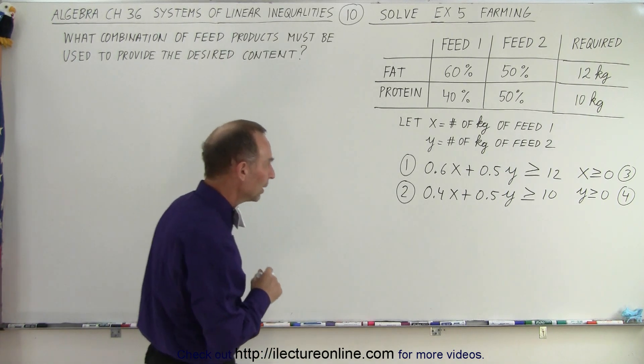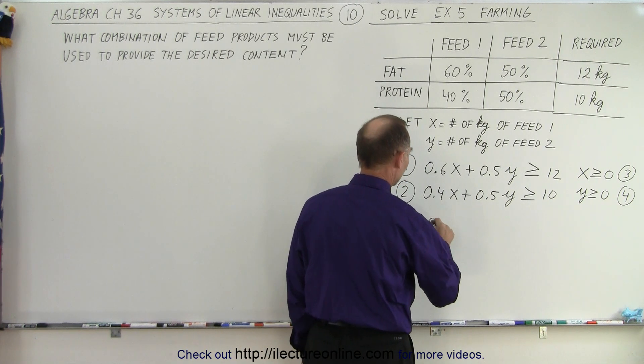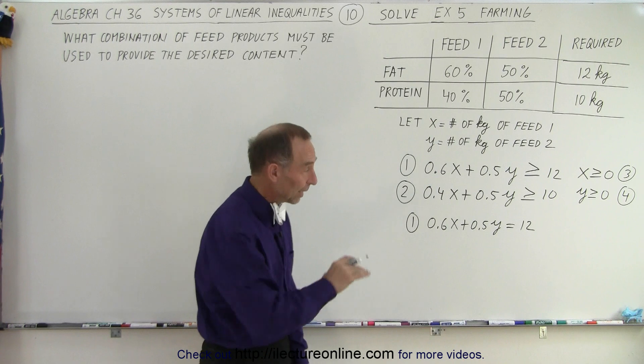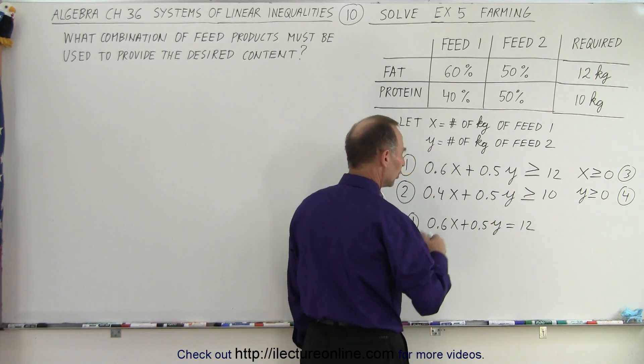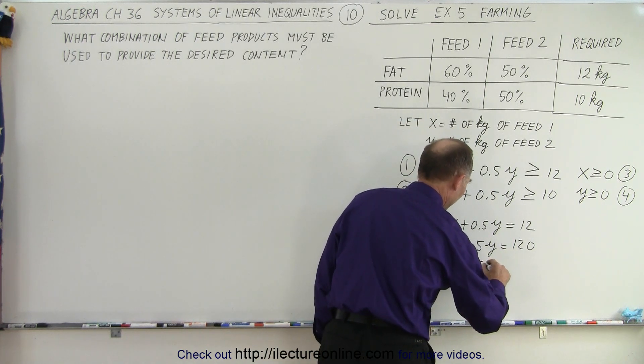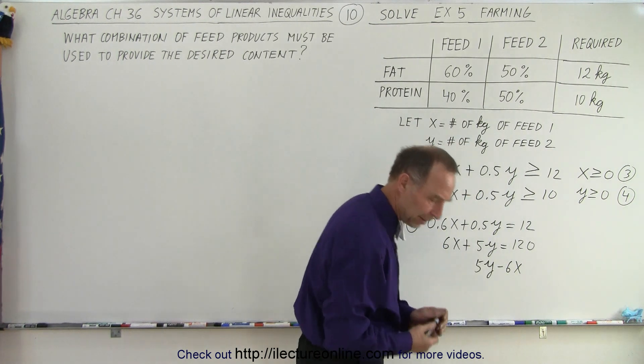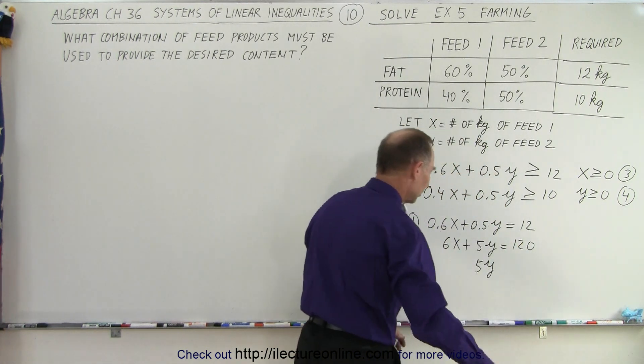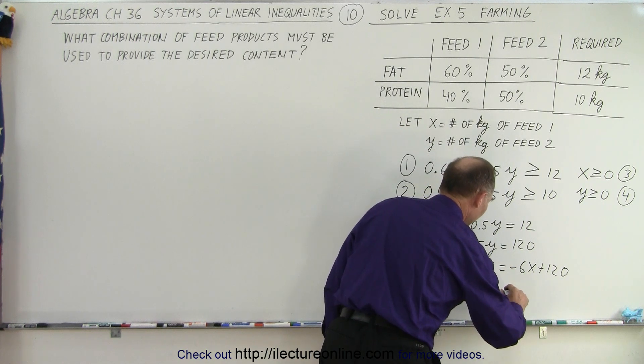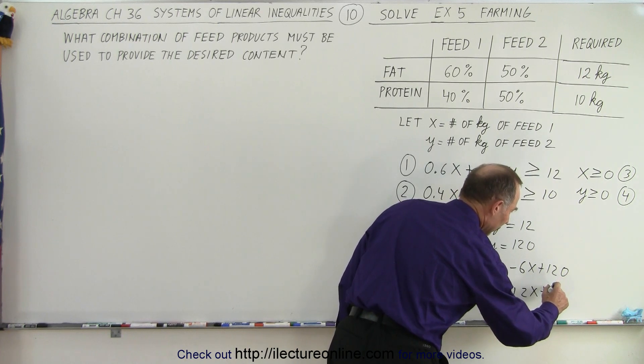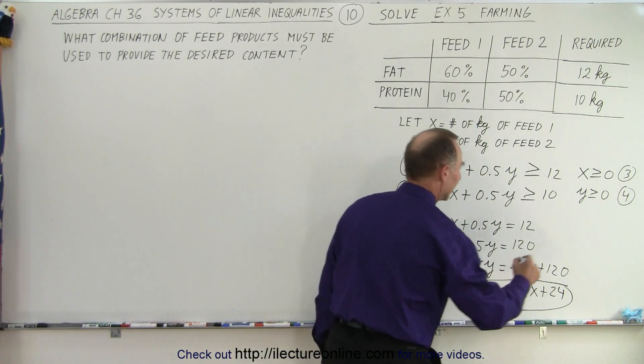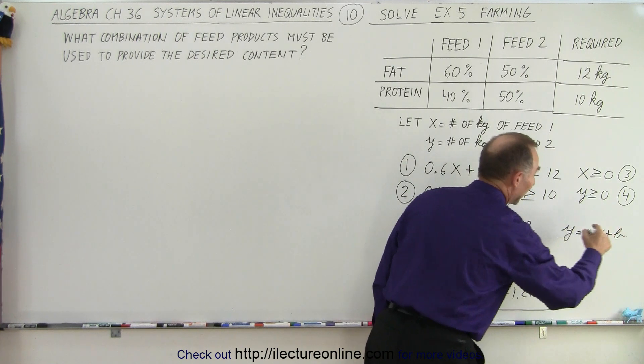So in order to graph them, we're going to turn those two into equations. So for inequality number one, we end up with 0.6x plus 0.5y is equal to 12, because we want to look for the boundary. We're going to get a solid line because of the equal symbols. Multiplying everything by 10, we get 6x plus 5y equals 120. Move the 6x across, 5y equals minus 6x plus 120, and then divide everything by 5. We get y equals minus 1.2x plus that would be 24. So there's equation number one. And we have that equation number one in the y equals mx plus b format, which makes it easier to graph.